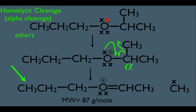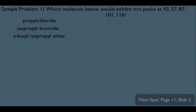Let's try a sample problem to pull this together. The question asks: which molecule below would exhibit m/z peaks at 43, 57, 87, 101, and 116? The three options are propyl chloride, isopropyl bromide, and S-butyl isopropyl ether. The plan of attack is to look at each molecule, consider all possible fragmentation modes, calculate the mass of each fragment, and match them to the given peaks.